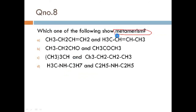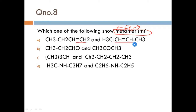Next question: which of the following will show metamerism? As we know, metamerism involves two isomers that have an unequal distribution of carbons on the sides of the functional group — these are called metamers. Now looking at the options, the first ones are alkenes, and alkenes do not show metamerism as we discussed in the previous video.